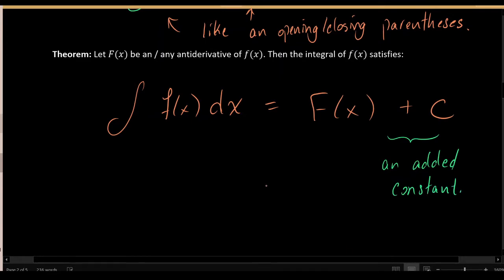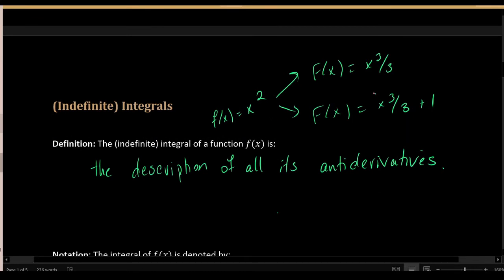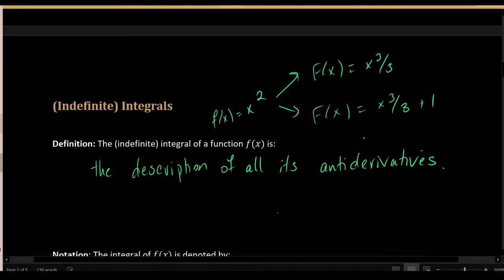Let's scroll back to our example with x squared. We had one known antiderivative, x cubed over 3. The other valid antiderivative had the form x cubed over 3 plus the constant 1. As it turns out, functions of this form are the only kinds of antiderivatives that little f can possess — start with some basic antiderivative and then add a constant to the end.